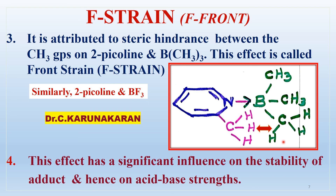Looking at the steric hindrance in the adduct: because of free rotation, the groups occupy more volume, resulting in steric hindrance. As a result of this F-strain, the basicity decreases — the electron-donating ability decreases. The approach of the two molecules becomes difficult due to front strain. This F-strain has a very significant effect on the stability as well as on the Lewis acid-base strength.